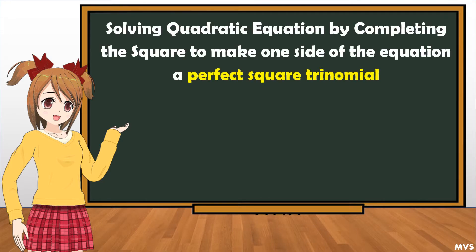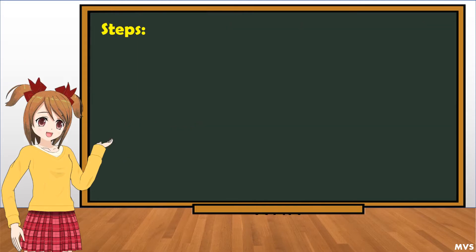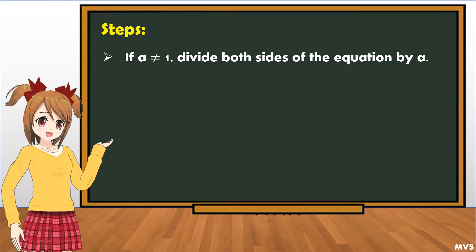Solving quadratic equations by completing the square means making one side of the equation a perfect square trinomial. It is a perfect square trinomial if the first term and last term are perfect squares. These are the steps: first, if a is not equal to 1, divide both sides of the equation by a.